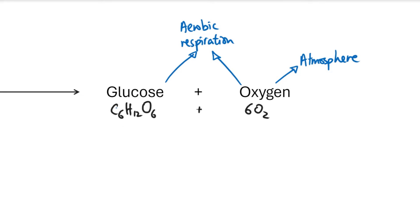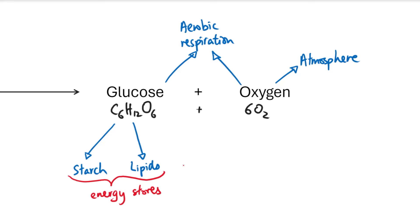Glucose is the more interesting product — we need to know how the plant actually uses it. Any excess glucose, apart from what's used in respiration, can be converted into other molecules which form part of the plant's structure or storage. First, it can be turned into starch, which is essentially a bunch of glucose molecules stuck together — a polysaccharide, what we call a complex carbohydrate. It can also be converted into lipids or fats, and both are useful as energy storage. If there is not enough light so photosynthesis can't occur, the plant can break down the starch and lipids back into glucose for respiration and energy. We can also find a lot of starch in fruits, where it stores glucose for the seeds inside to grow.